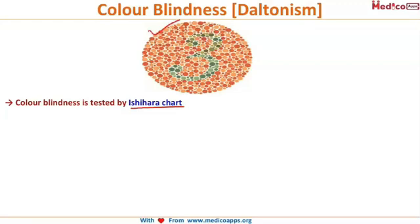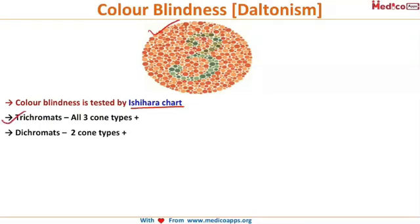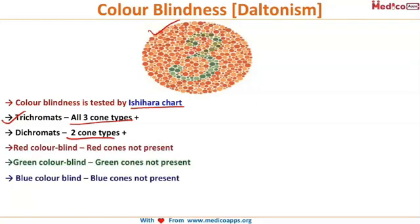Depending on the number of colors a person can see: a normal person is called a trichromat, where all 3 types of cones are functioning normally. Dichromats have only 2 types of functional cones. In red color blindness, the red cones are absent; similarly, green and blue cones are absent in green and blue color blindness respectively. Whatever color blindness it is, that colored cone is absent — please remember this.